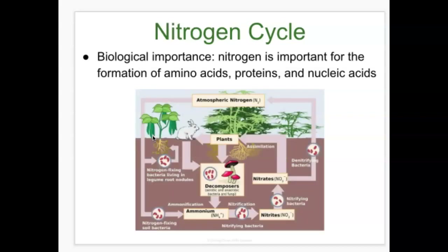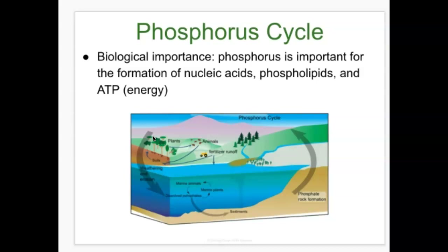The nitrogen cycle is important because nitrogen is a key element in the formation of amino acids and proteins, and also in nucleic acids like DNA and RNA, as nitrogenous bases make up those polynucleotides. The phosphorus cycle is biologically important because phosphorus forms the alternating sugar-phosphate backbone of nucleic acids like DNA and RNA. Phosphorus is also a component of phospholipids — the lipids making up the major component of every biological membrane, whether the cell membrane or organelle membranes like the mitochondria or chloroplast — and phosphorus is found in ATP (adenosine triphosphate), which has three phosphate groups.